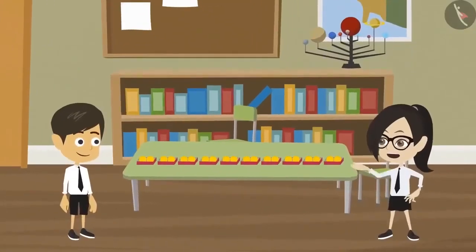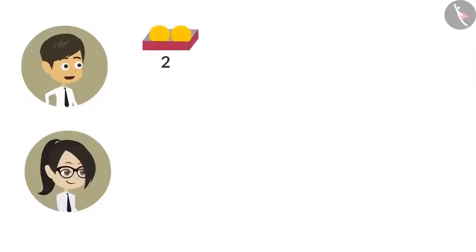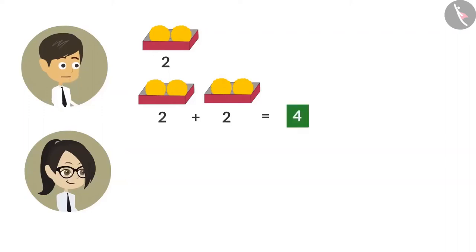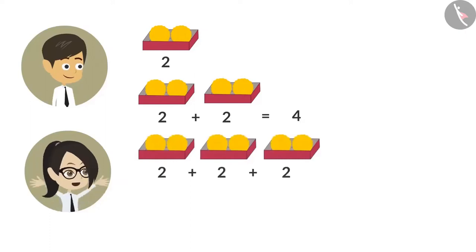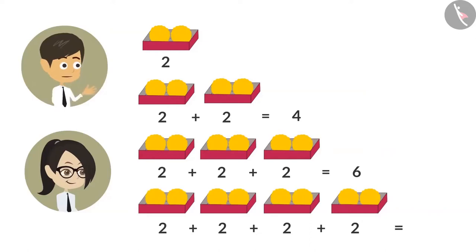Now look. There are 10 boxes. Each box has two ladoos. So let's count the ladoos in the boxes. Each box has two ladoos. To know the ladoos in two boxes, we have to add two two times, so the answer is four. Which means there are four ladoos in two boxes. To know how many ladoos are there in three boxes, we have to add two three times. After adding two three times, the answer we get is six. To know the number of ladoos in four boxes, we have to add two four times. After adding two four times, the answer is eight.